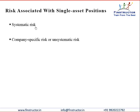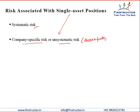A single asset position will continue to have systematic risk — that is, the market risk which will be there in our portfolio depending on the kind of investments we are taking. However, the bigger problem with single asset positions is the high unsystematic risk, or diversifiable risk, which we continue to carry because we are holding on to this risky single asset position. If we have a high position in real estate, then property-specific and location-specific risks also come in.